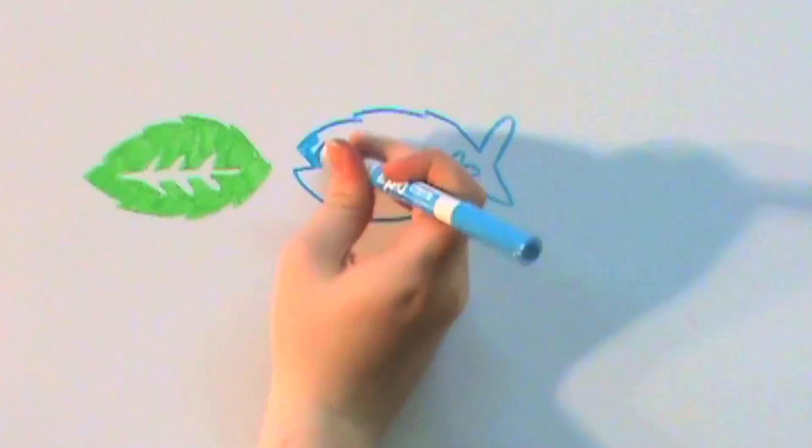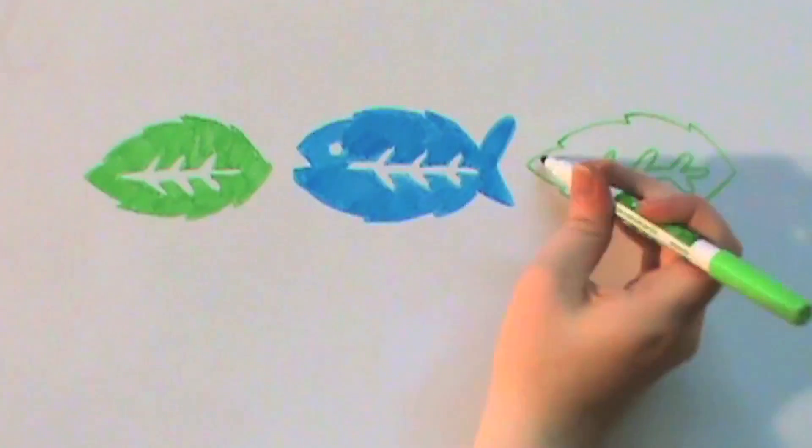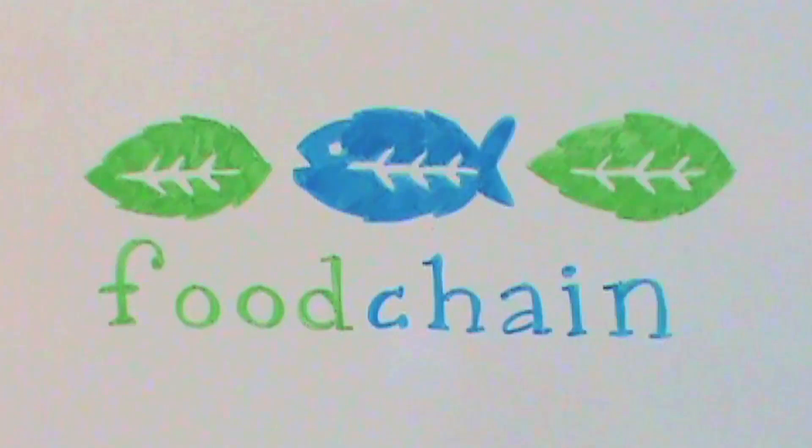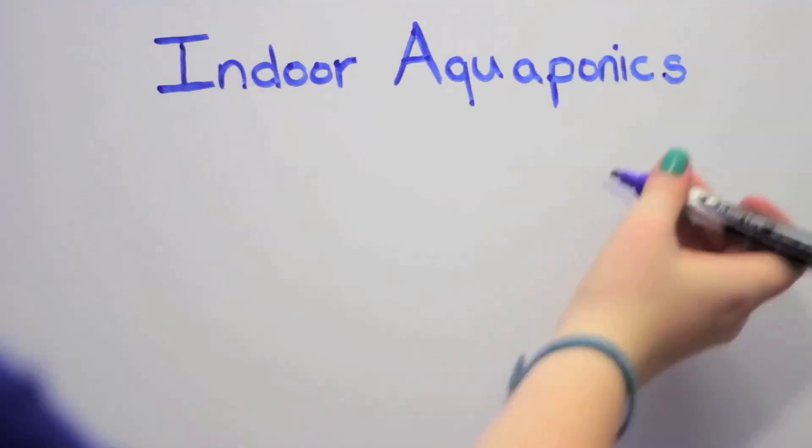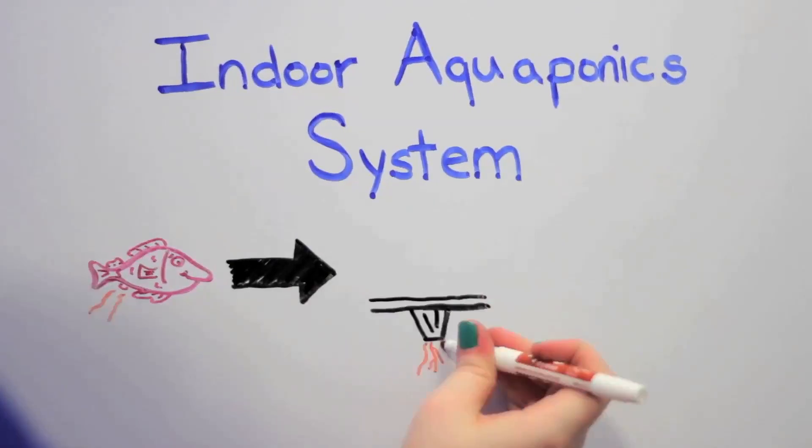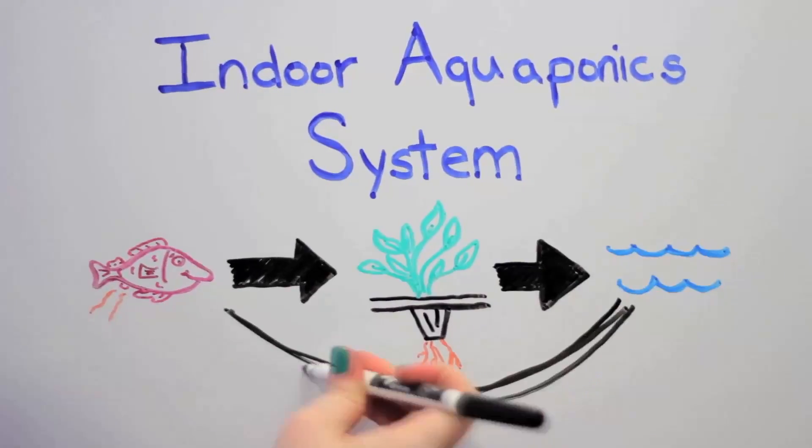In the fall of 2013, Food Chain was six months into operating our commercially scaled indoor aquaponic system, growing tilapia, lettuce, and herbs. This system used only a fraction of the resources of conventional cultivation, since the fish waste serves as the food for the plants and the plants clean the water for the fish.